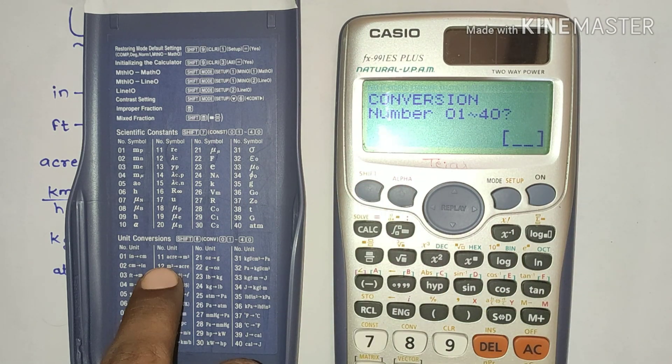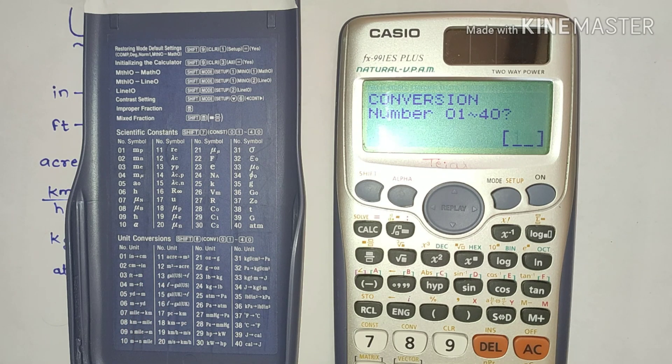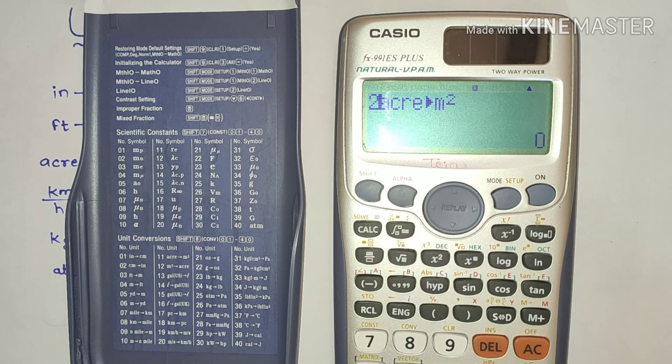Let's do some more. I want to convert from acre to meter square. Put 11. Let's consider 2 acres. The meter square comes to be 8093 meter square.